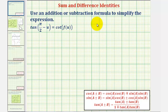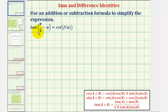We want to use an addition or subtraction formula, also known as a sum or difference identity, to simplify the expression tangent of the quantity pi over two minus u. In the homework we're told we're going to write this in terms of cotangent, but let's go ahead and ignore the right side and just simplify the left side.